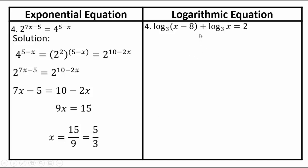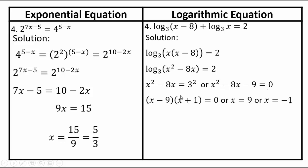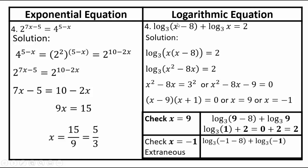Using properties of logarithms, combine log terms to get log base 3 of x times (x minus 8) equals 2. Rewrite as x squared minus 8x equals 3 to the power 2, giving a quadratic equation. Factoring or using the quadratic formula gives x equals 9 or x equals negative 1. We must check both in the original equation. Plugging in 9: log base 3 of 1 plus log base 3 of 9 equals 0 plus 2 equals 2 — checks out. However, x equals negative 1 doesn't work because the domain of a log function is (0, infinity). So negative 1 is an extraneous solution; only x equals 9 is valid.